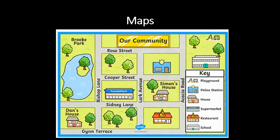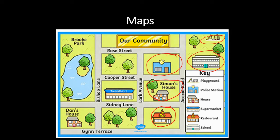This is a map that somebody made of their town. On their map, they have shown where the playground is, where their school is, where the police station is. They have put Simon's house across the road from the police station. And across from Simon's house is a pizza restaurant. Over here is Dan's house. And across the road from Dan's house is a park with a lake.